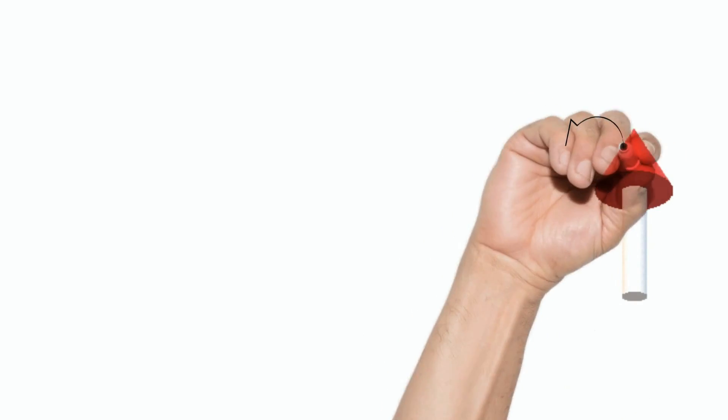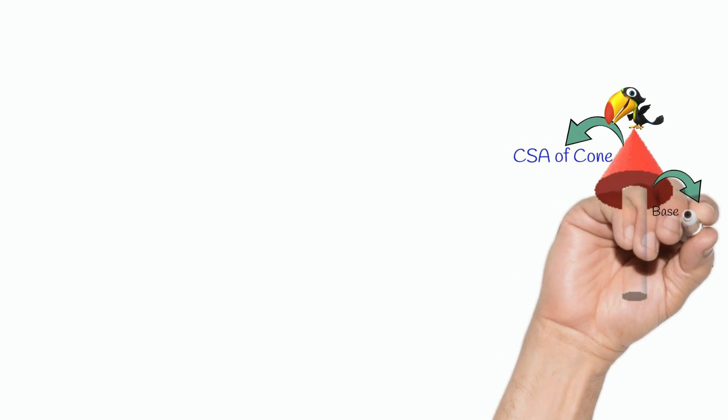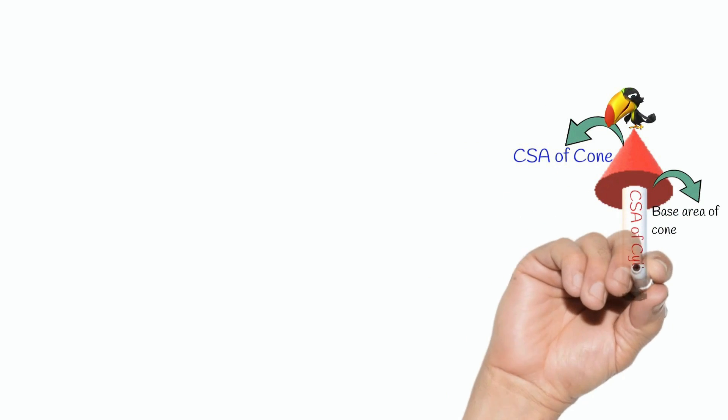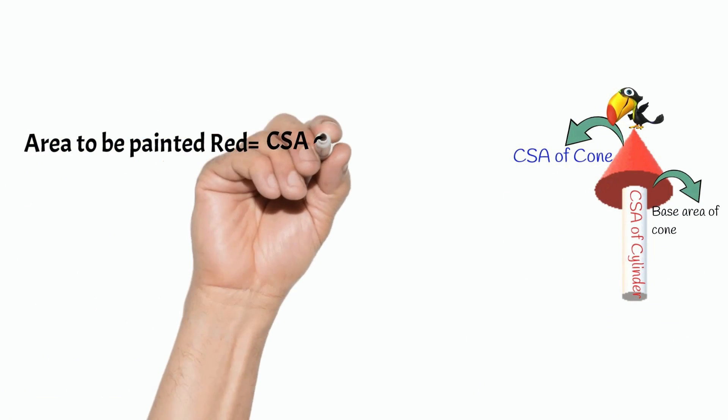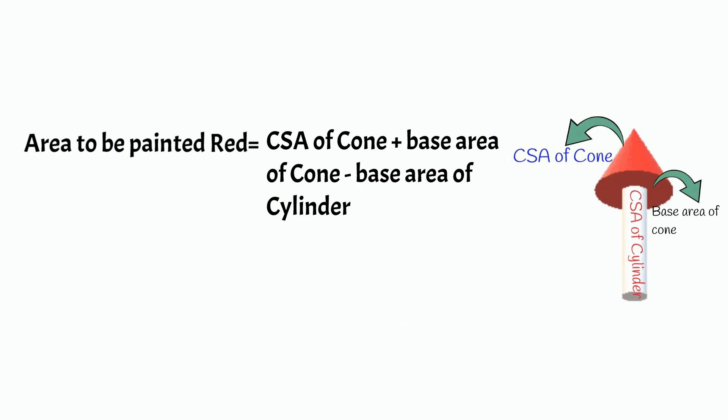Here, the wooden toy is a combination of cone and cylinder. Area to be painted red equals curved surface area of cone plus base area of cone minus base area of cylinder.